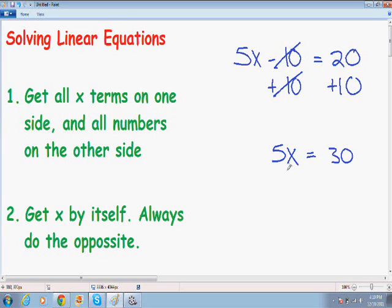Since this 5 is being multiplied by the x, 5x, even though you don't see it, there's a little dot right here. So the 5 is being multiplied by the x. You always need to do the opposite to get x by itself. So since 5 is being multiplied by the x, I'm going to divide by 5 just so we can get x by itself.